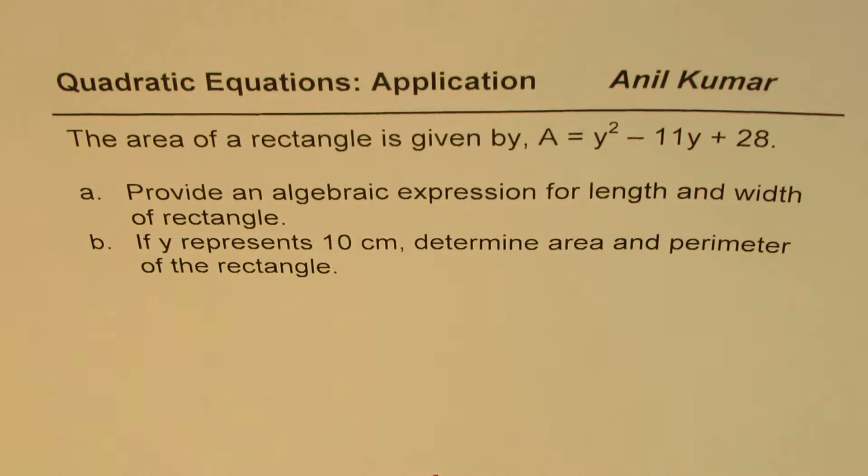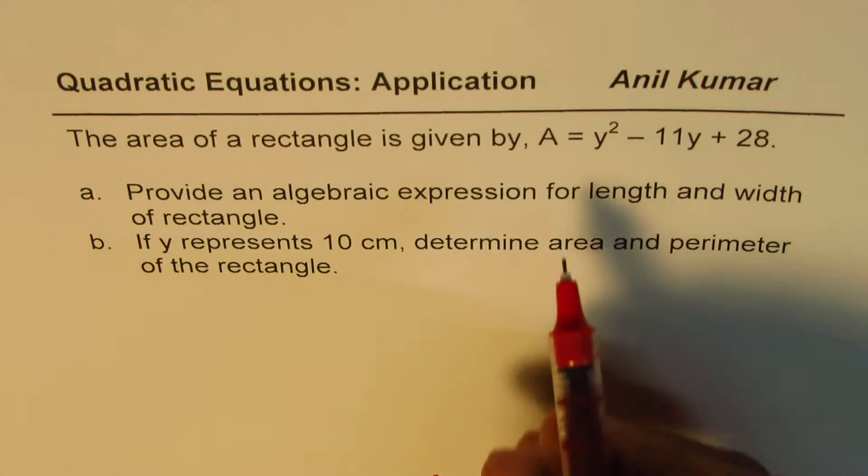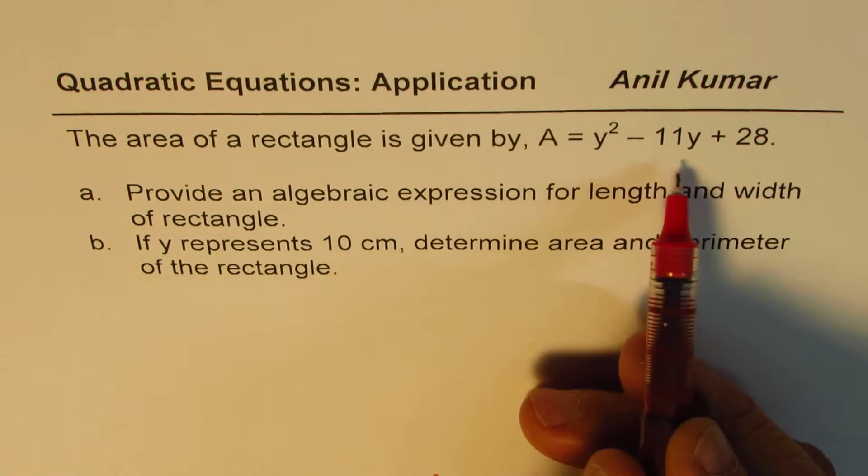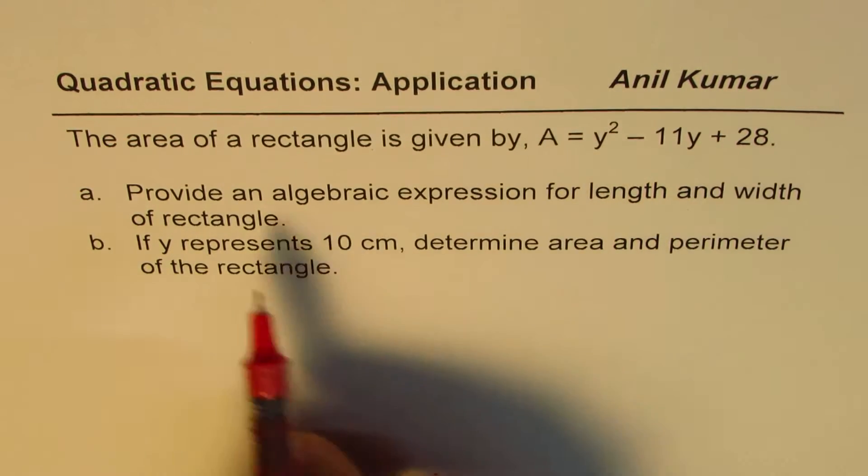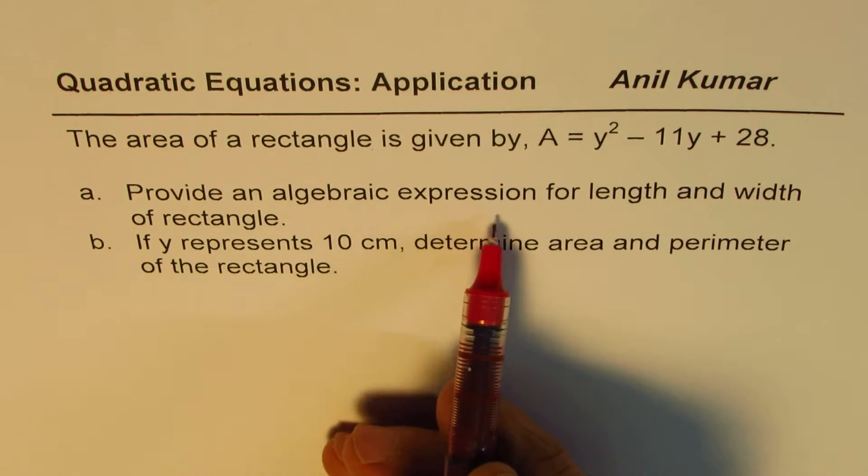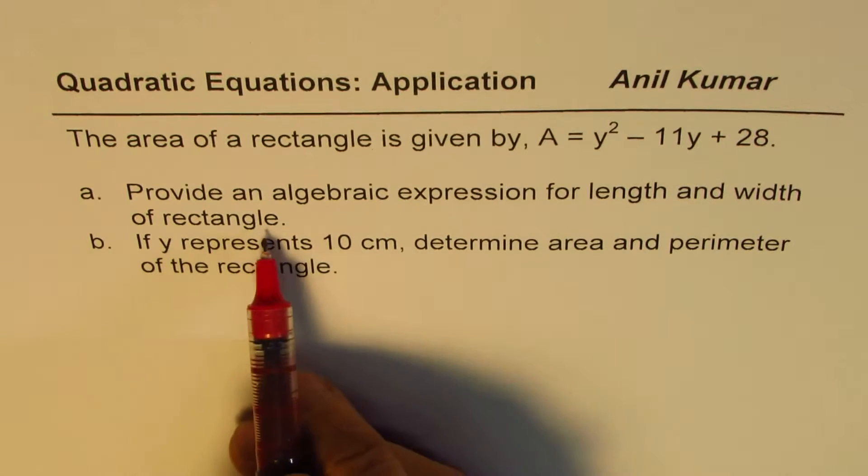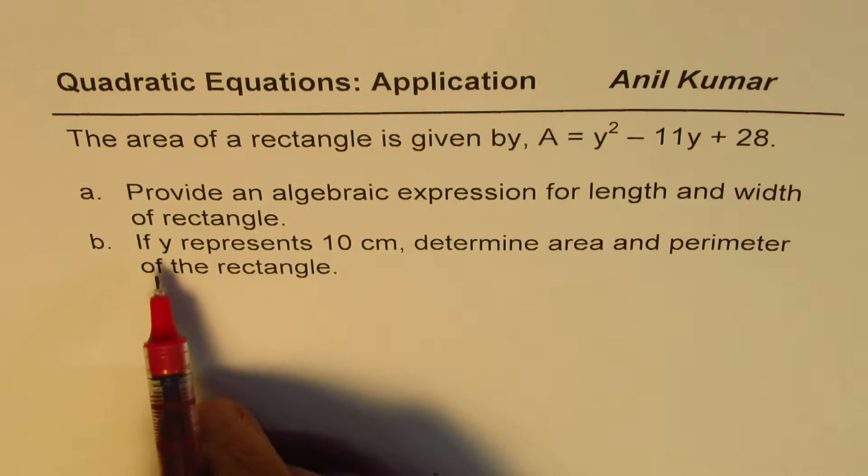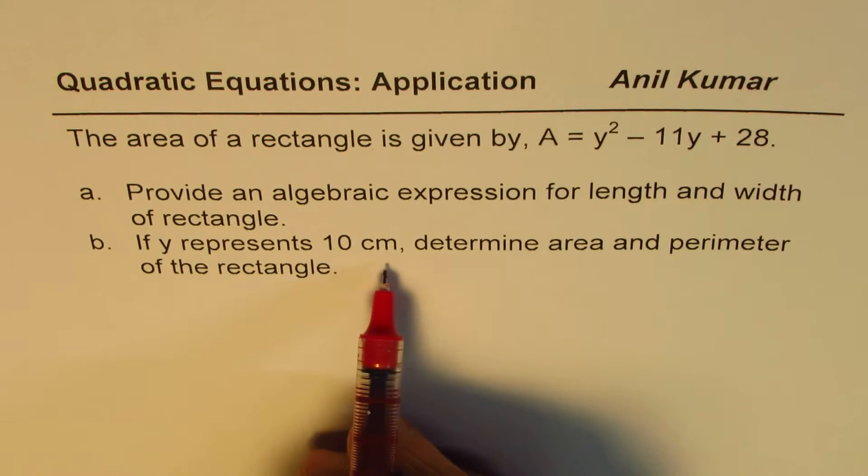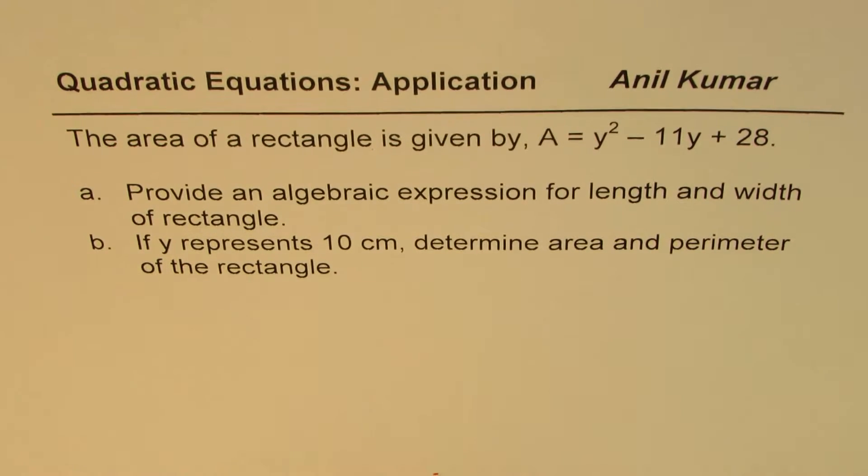The question here is, the area of a rectangle is given by A equals Y squared minus 11Y plus 28. Provide an algebraic expression for length and width of the rectangle. Part B is, if Y represents 10 centimeters, determine area and perimeter of the rectangle.